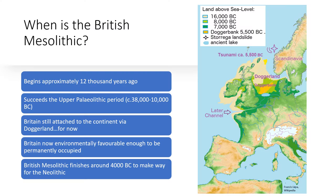Let's begin with some chronology. The British Mesolithic begins around 10,000 BC, right after the end of the Upper Paleolithic period. The Mesolithic will continue until 4000 BC when the Neolithic period begins.